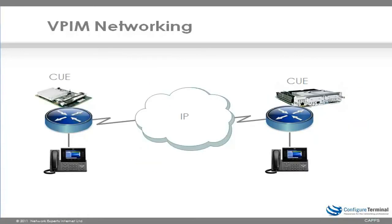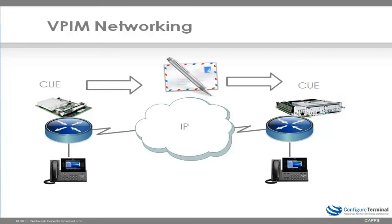So now, rather than just having one Unity Express system, we now have two. On the left-hand side we've got Unity Express, and on the right-hand side we have a separate Unity Express module. We could set it up so the phone on the left is able to send messages to the phone on the right. But rather than being limited to a single system, you can make multiple systems transparently act as a single system to your users — they think there's only one system, when in actual fact there might be multiple voice messaging systems, including Unity Express with Unity or Unity Connection, or another third-party voice messaging system.